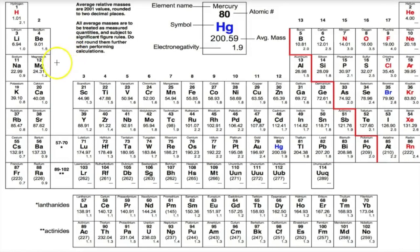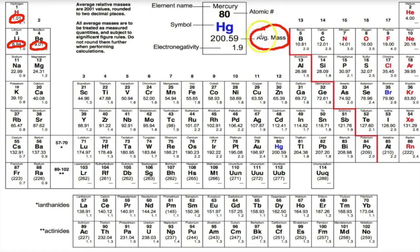If we take a look at the periodic table of elements, each little box here is going to have a number on the bottom or underneath each chemical symbol. For example, lithium 6.94, beryllium 9.01. This number on the bottom is called the average atomic mass. It's the average of all known isotopes of that element and their relative abundance — the percentage that they occur naturally in the universe.